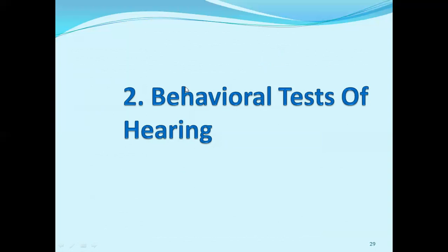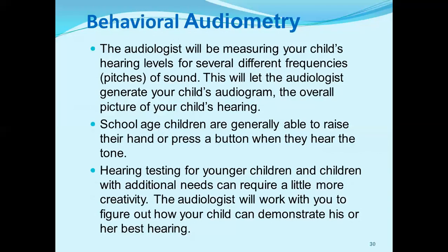The next type of test is behavioral audiometry. We have completed the objective tests; now we are going to behavioral tests. Behavioral audiometry is where an audiologist measures your child's hearing levels across several different frequencies and pitches of sounds. This allows the audiologist to generate your child's audiogram — the overall picture of your child's hearing.